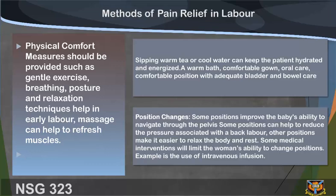Position changes: some positions improve the baby's ability to navigate through the pelvis. Some positions can help reduce the pressure associated with back labor. Other positions make it easier to relax the body and rest. Some medical interventions will limit the woman's ability to change positions, for example the use of intravenous infusion.